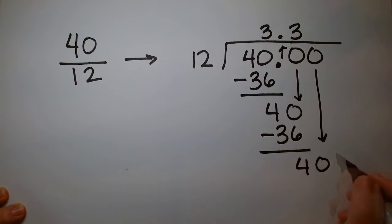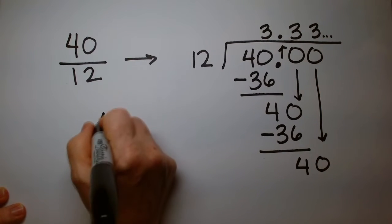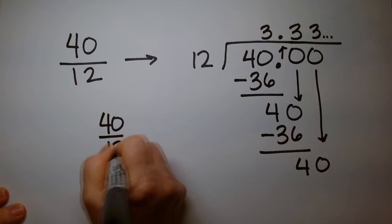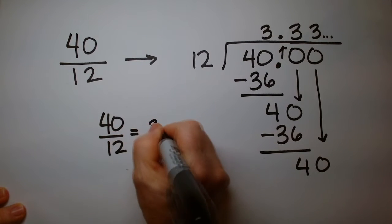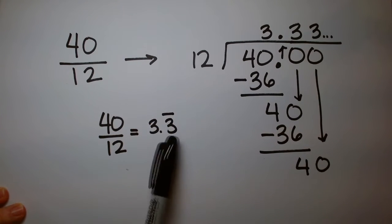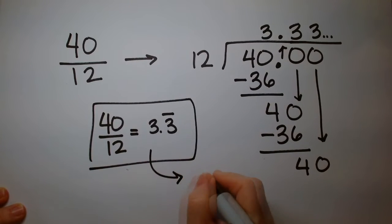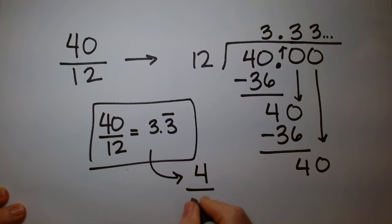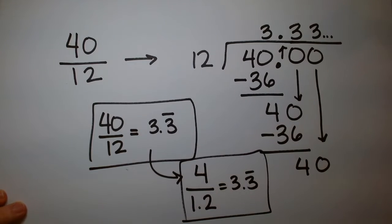This is going to continue. So 40 over 12 is equal to 3.3 bar. Bar just means it repeats. And that is actually also the answer to the problem of 4 over 1.2. That's how we divide a whole number by a fraction.